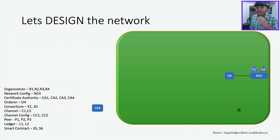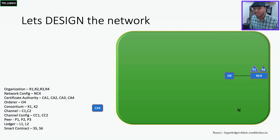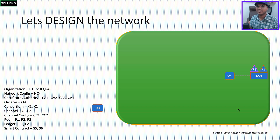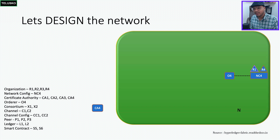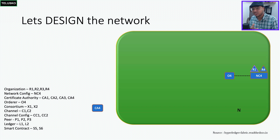Once our network is ready, we have an orderer peer responsible for instantiating this network with the help of a configuration NC4, which is created by R4. R4 is our organization and it has taken the responsibility of defining the network. R4 says it got the initial network configuration but needs someone else to also do the admin work — that's where R1 comes in. The components for R4 are defined with the help of a CA, which is the certificate authority, and we'll be having different CAs for different organizations.